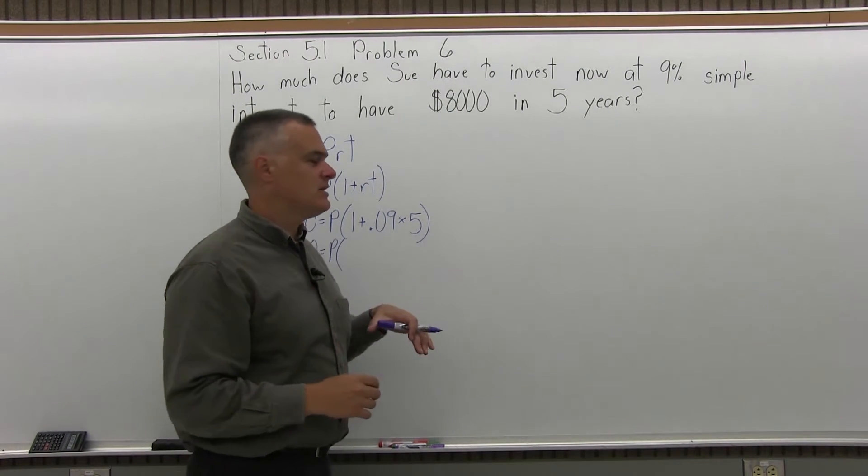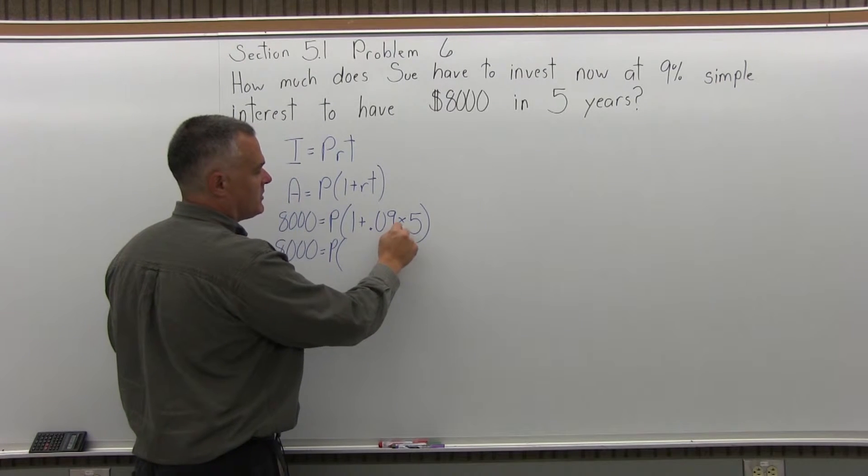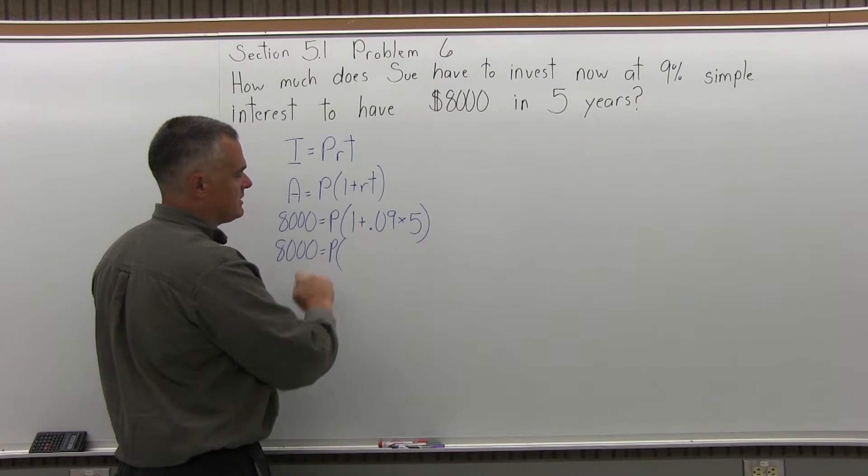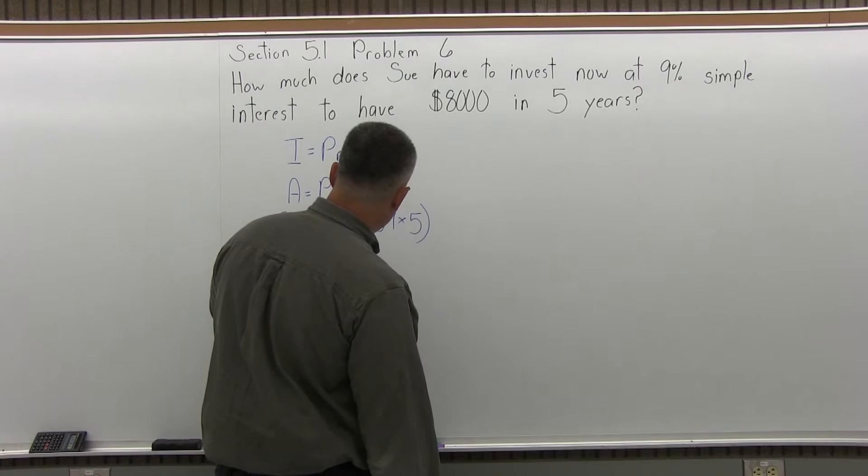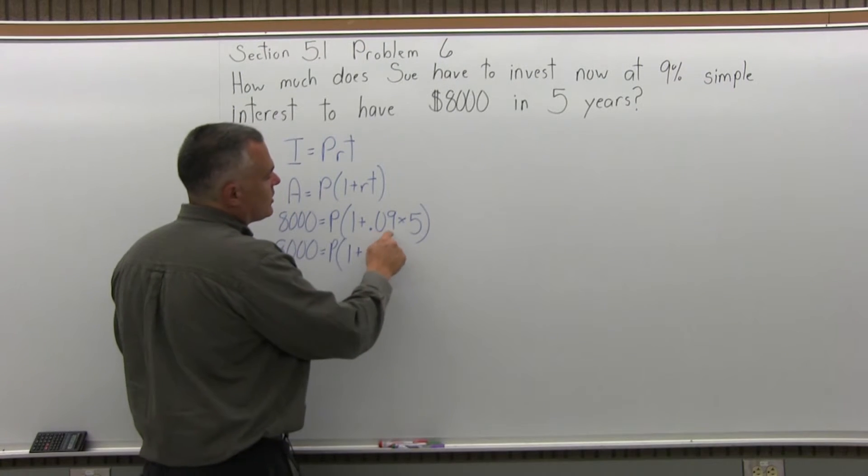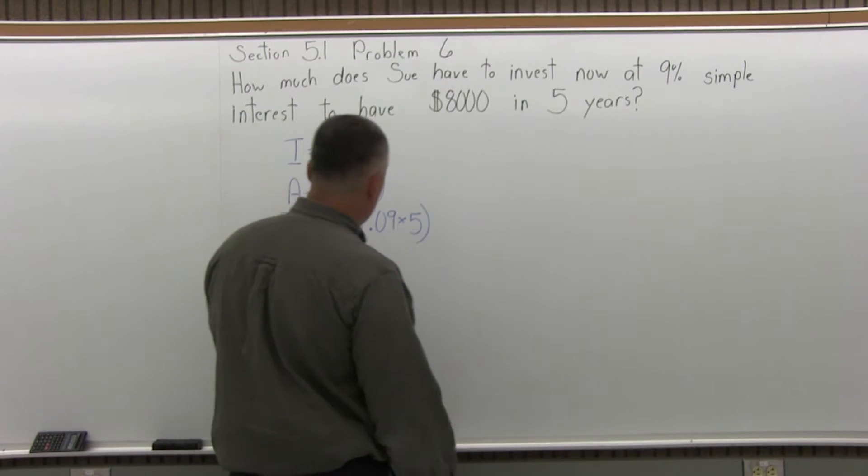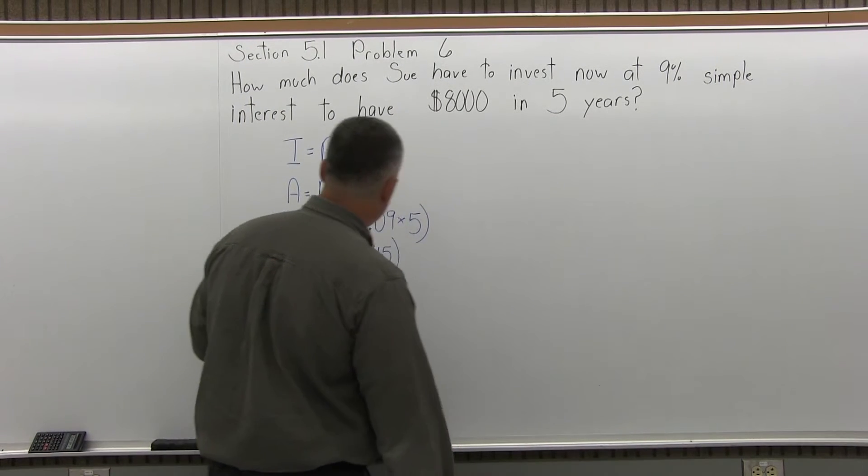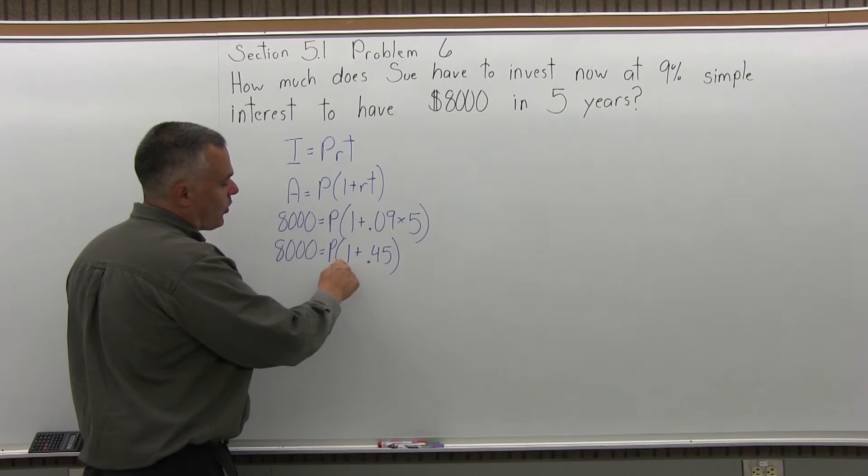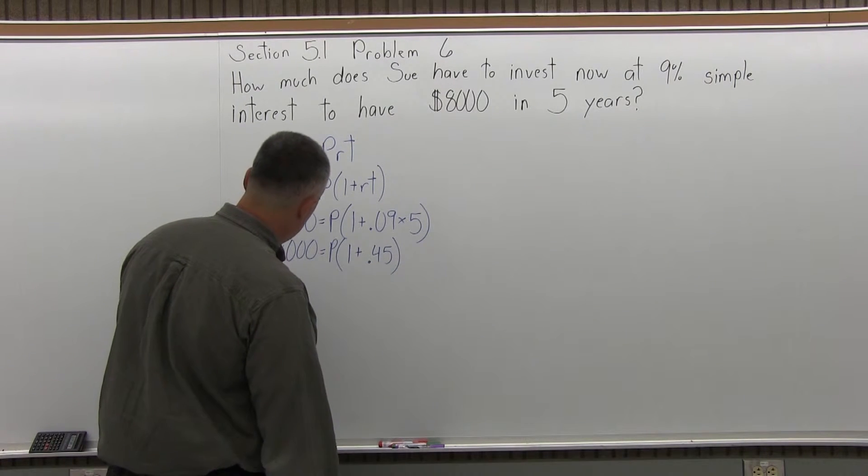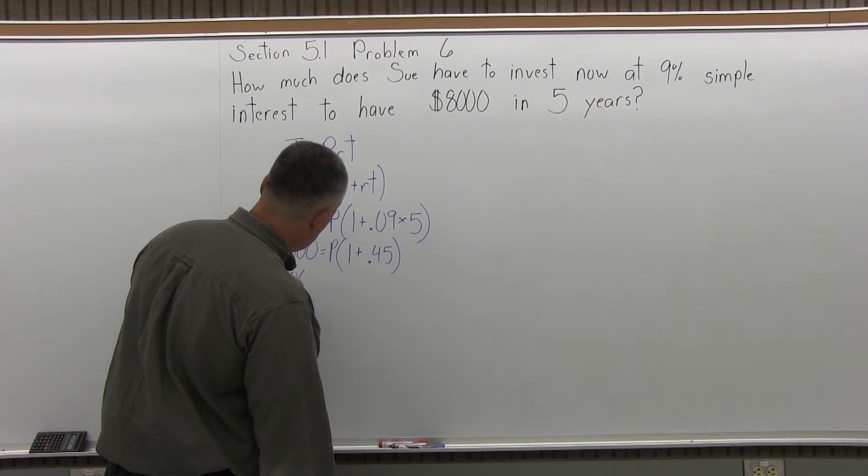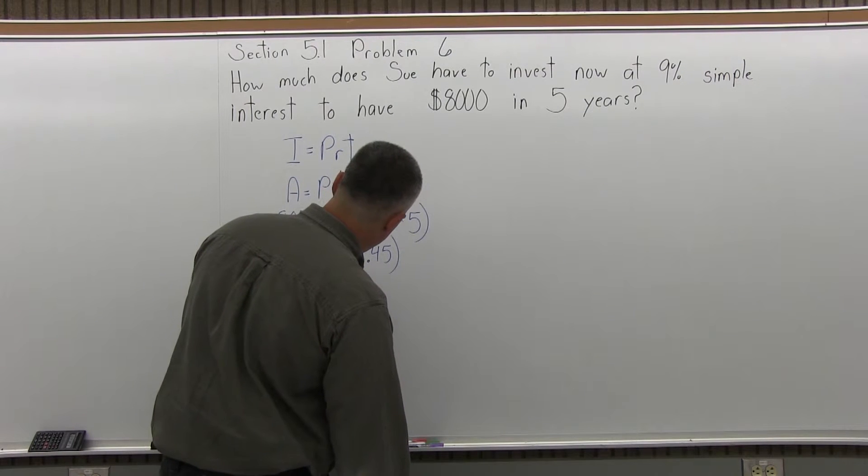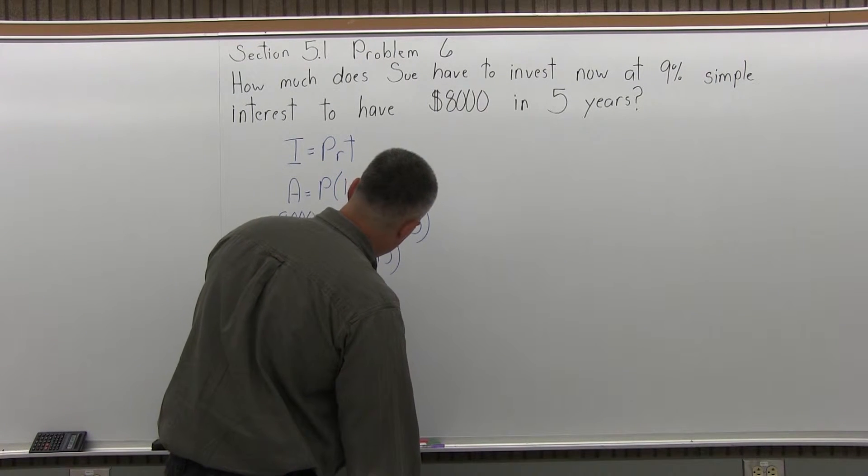Please excuse my dear Aunt Sally. The multiplication has to be done before the addition. So I'm going to have 1 plus .09 times 5 is .45. And now in the parentheses, I'm left with 1 plus .45. So I have 8,000 equals P times 1.45.